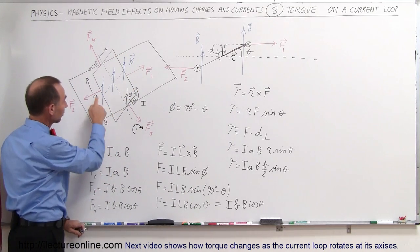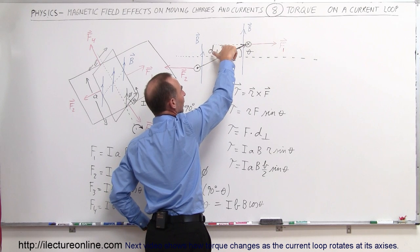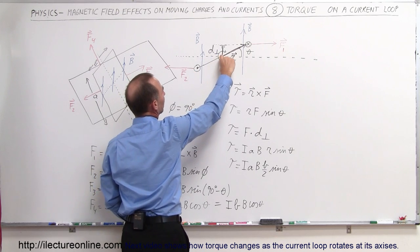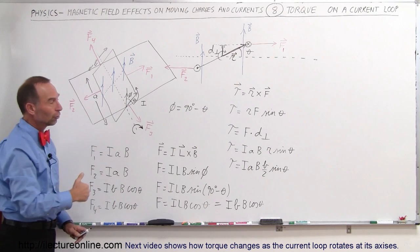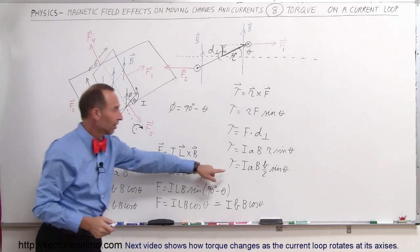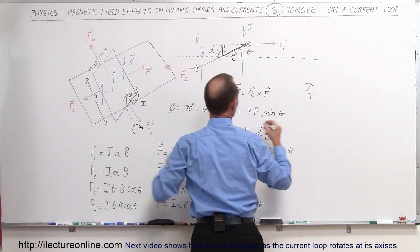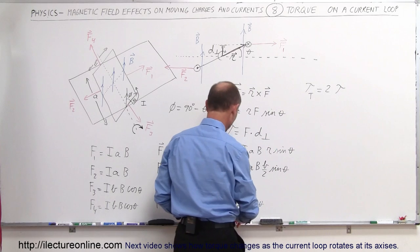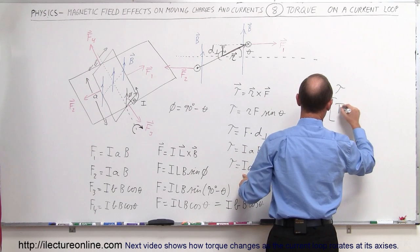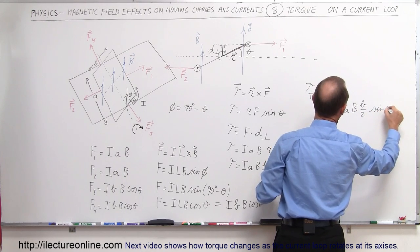Notice we have a similar torque on the other side — that would be caused by F2. F1 will try to rotate the whole thing in a clockwise direction, and F2 will also try to rotate everything in a clockwise direction. Notice that the perpendicular distance is the same, and the magnitude of the force is the same for F2. So the total torque caused by both sides would be equal to twice the torque on one side only. Therefore, the total torque in this direction is equal to 2 times I times A times the magnetic field B divided by 2 times the sine of theta.